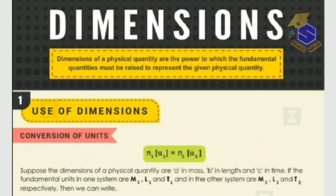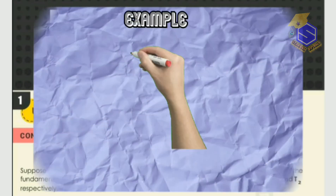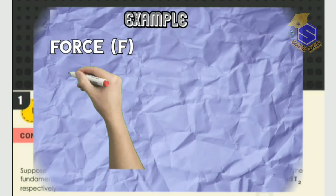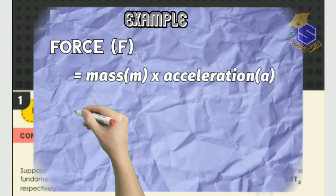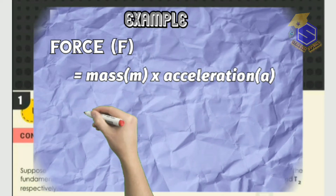Now let us take an example of the physical quantity force. We know force is equal to the product of mass and acceleration. Force equals mass into acceleration. Mass is a fundamental quantity, so keep mass aside.